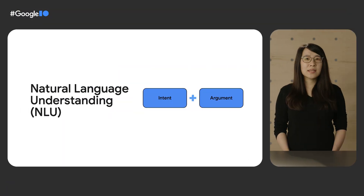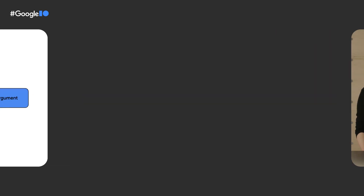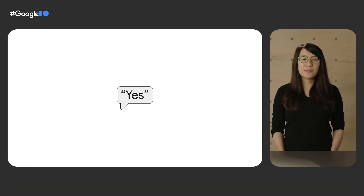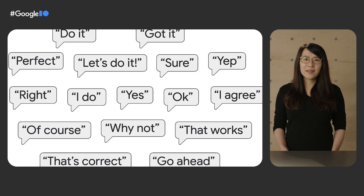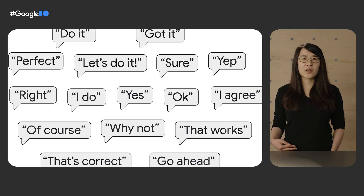After the speech recognition step, the Assistant platform converts the user query text into an interpretation — a formal description of what the user wants, with intent and arguments rewritten into a structured format. This is called natural language understanding, or NLU. Understanding intent is not a simple task. For example, if a user's response is 'yes,' that is straightforward — but what about all the variations of yes, like 'that works,' 'sure,' 'why not,' 'I agree,' 'go ahead,' and so much more? Google Assistant NLU can understand all these different variations of a user's input.